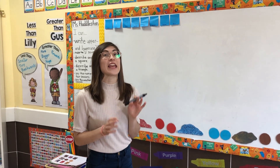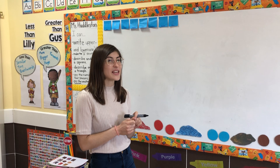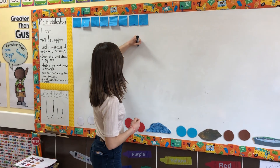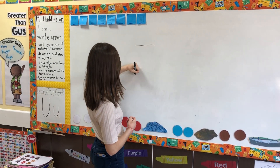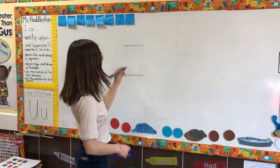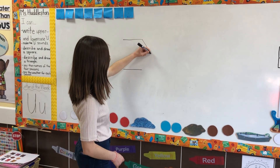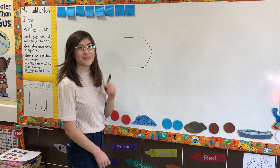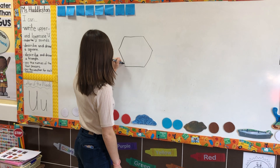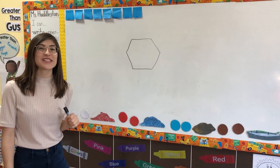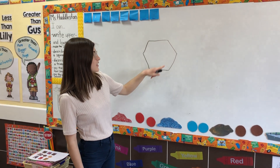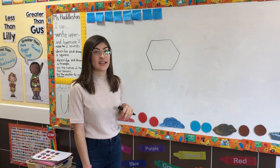Today in math we're learning about a new shape. Let's see if I draw this shape if you can guess what the shape is. Starts like this. Do you know what it is yet? Do you have any more ideas? Okay, this is the shape we're learning about today. I don't know if you know the name of this shape, but this shape is called a hexagon. Hexagon.